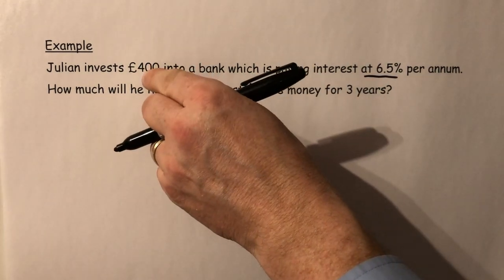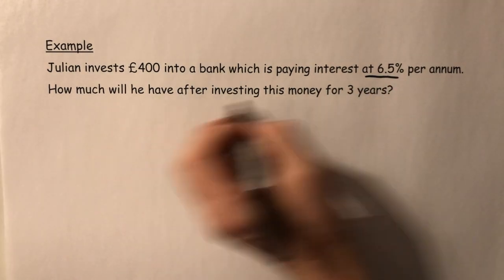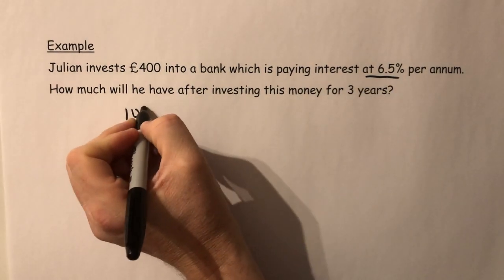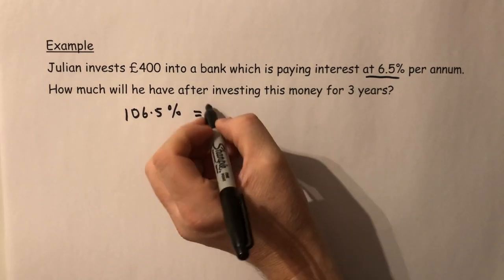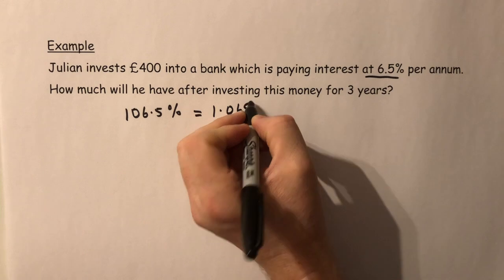Worth the 100 percent plus the 6.5 percent. So the amount in the bank will be 106.5 percent, which as a decimal is 1.065.